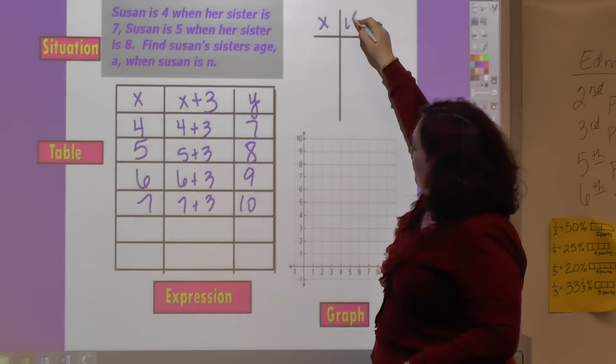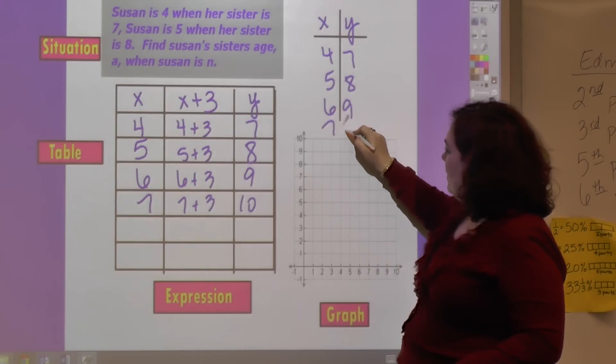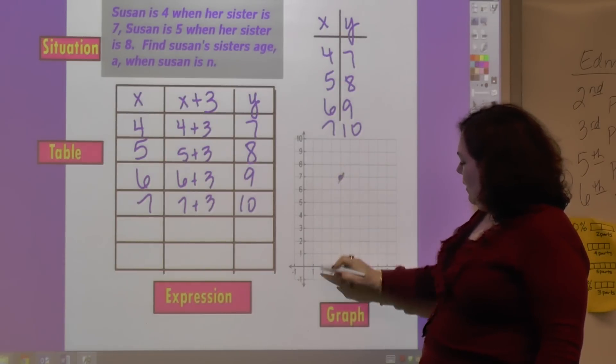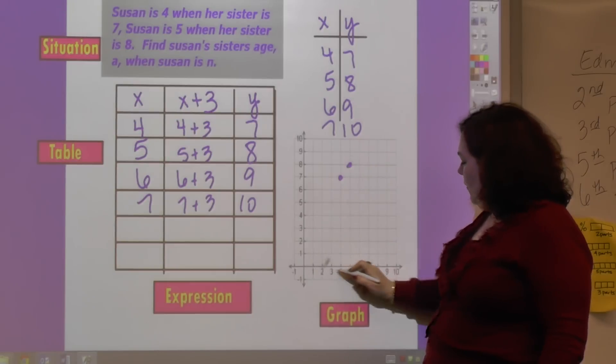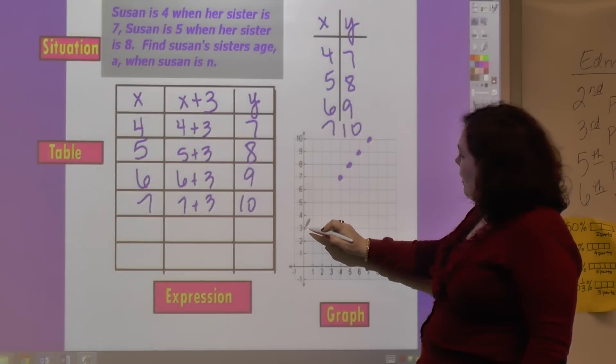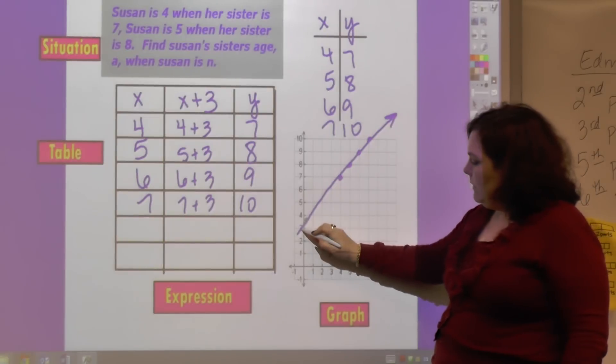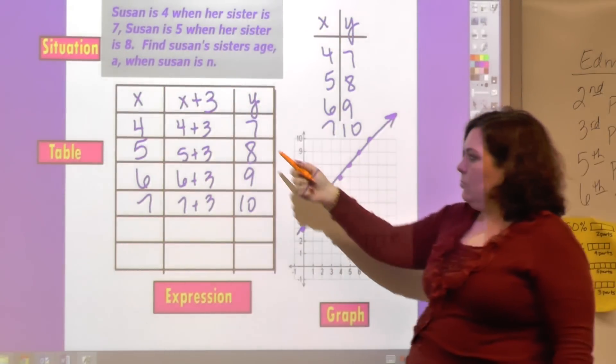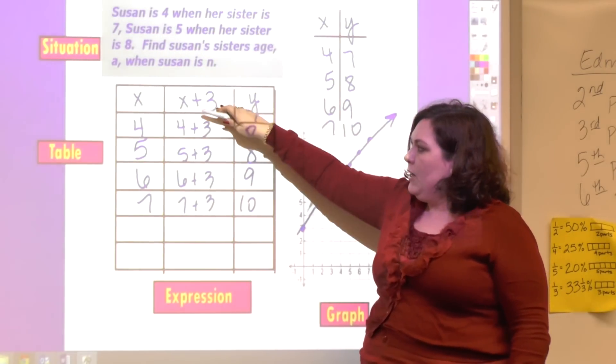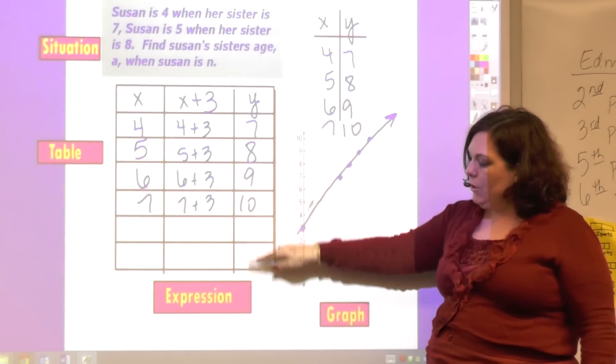My X's and my Y's would be four and seven, five and eight, six and nine, seven and ten. So I would go over four and up seven, and over five and up eight, and over six and up nine, and over seven and up ten. It's going to make a nice straight line that's going to go like that. Whenever she was zero, her sister was three because it's plus three. So this is the situation, this is the table, the expression is this, and this is the graphing points and the graph. So it's the four things: one, two, three, four.